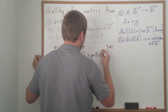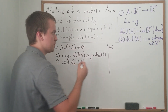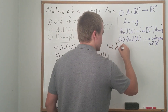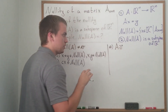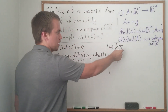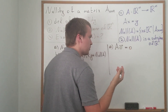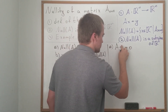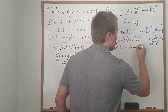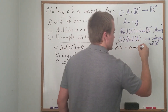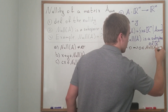Let's check the first property. How do we know that null(A) is not empty? We know this because if we take the zero vector and apply matrix A to it, any matrix multiplied by the zero vector gives the zero vector. So by definition of nullity, zero belongs to null(A). The first property is done.